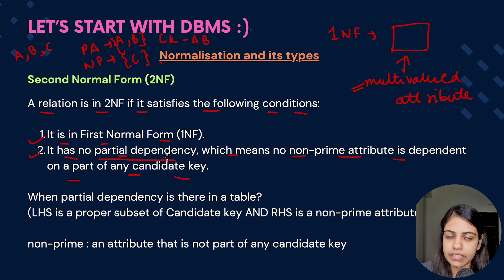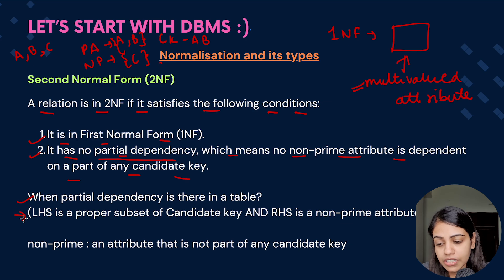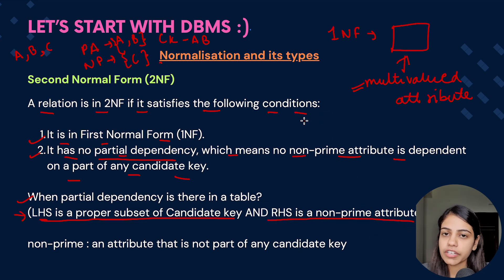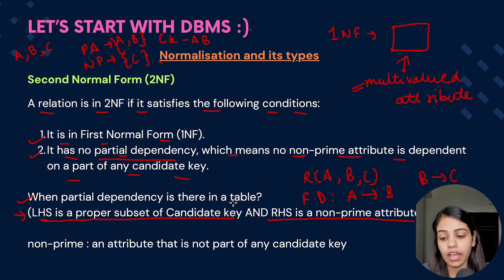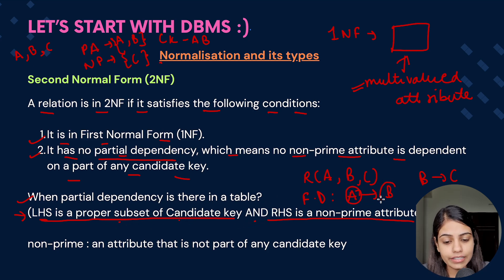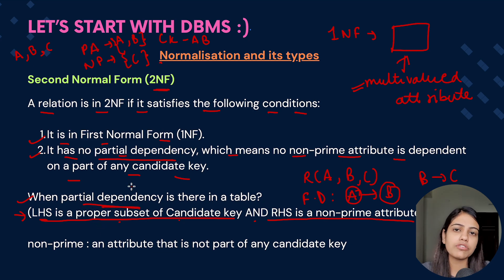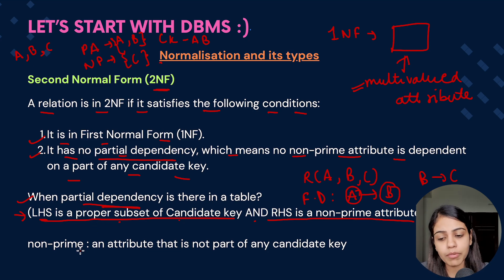Now let's understand what partial dependency exactly is. A partial dependency is present in a table when the LHS is a proper subset of the candidate key and the RHS is a non-prime attribute. Whenever you are given any question, you are provided with all the attributes present in the table, then you are provided with the functional dependencies. Now according to the partial dependency definition, we have to see if LHS is a proper subset of candidate key and RHS is a non-prime attribute. A particular non-prime attribute is partially dependent on the candidate key because it depends on a proper subset.